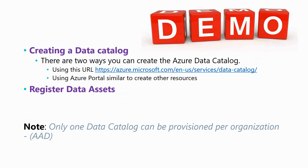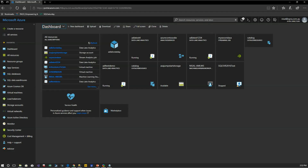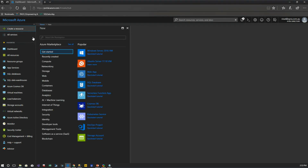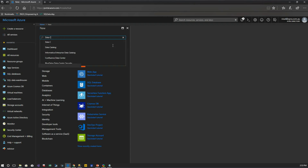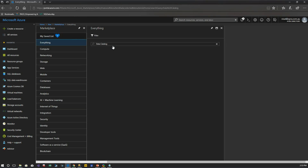There are two main ways to create an Azure Data Catalog: using the dedicated URL or from the Azure Portal. One important note — only one data catalog can be provisioned per organization. The main reason is that if you could provision many, you'd go back to the original problem of having multiple redundant data catalogs. So I'm now in the Azure Portal and I'm going to create my Azure Data Catalog by clicking 'Create a new resource' and searching for data catalog.